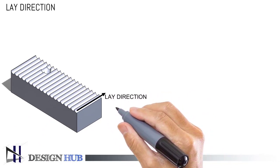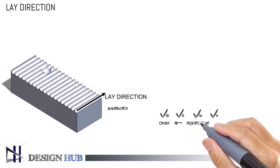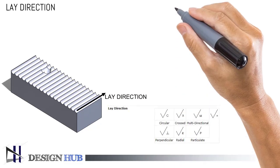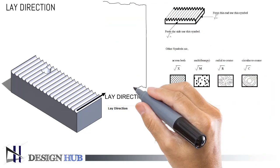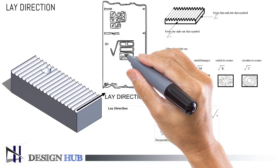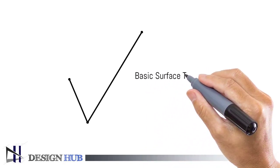Lay direction defines machining type or machining direction. It can be circular, crossed, multi-directional, perpendicular, radial, or particulate. In the next video, we will learn how to define surface roughness symbols in SolidWorks and AutoCAD. After discussing terminology, now we will learn about surface finish symbols and their meaning.